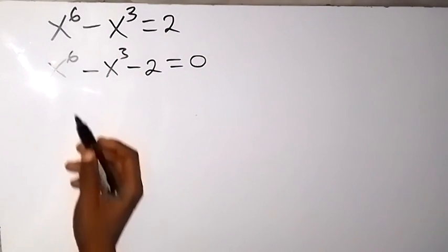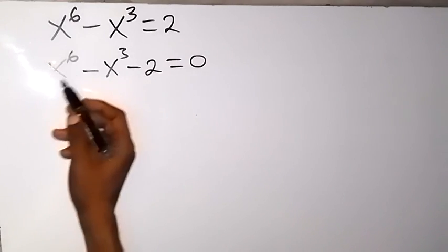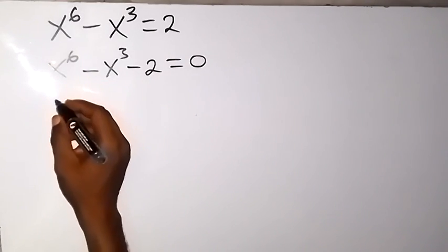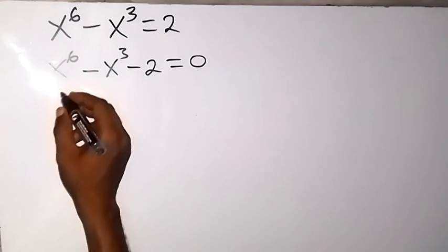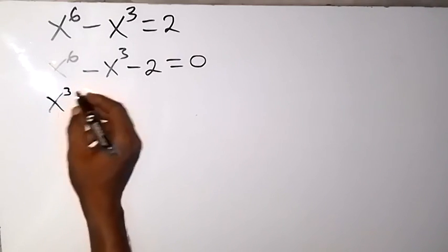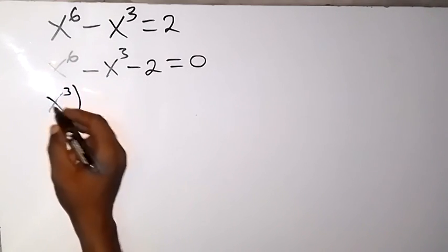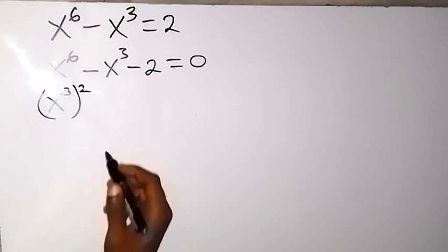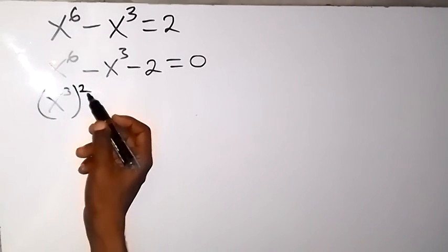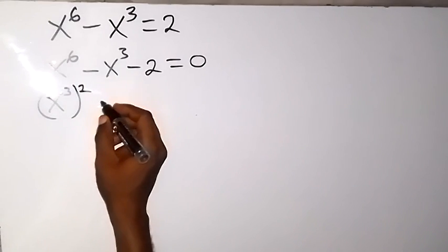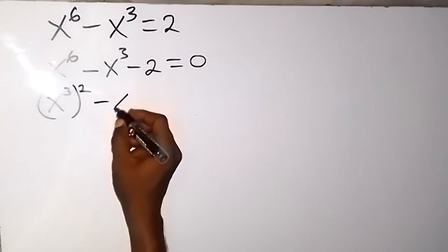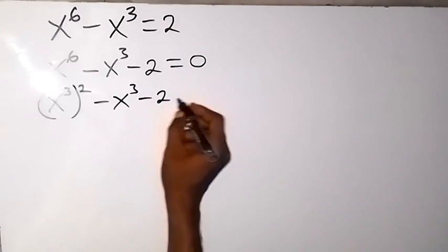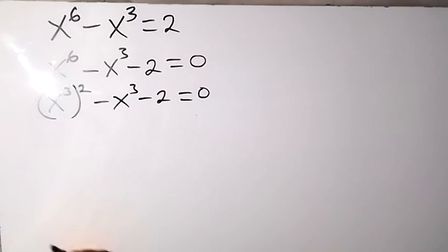Then we can rewrite this power of x in another way. We have x raised to power 3, then raised to power 2. From the law of indices, 2 times 3 would still be 6. Then minus x raised to power 3, minus 2, equals to 0.